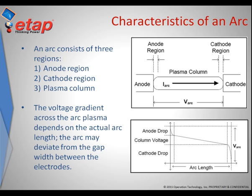Power is determined by the magnitude of both the arcing current and the arc voltage. The three available methods attempt to characterize both the magnitude of the arcing current and the arc voltage in order to determine the power released by the arc.